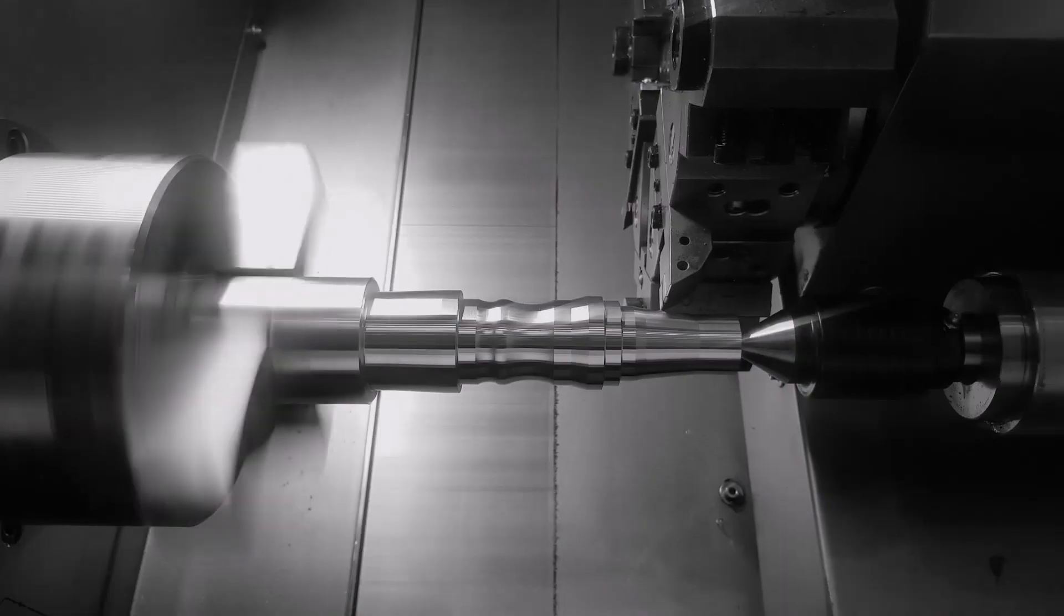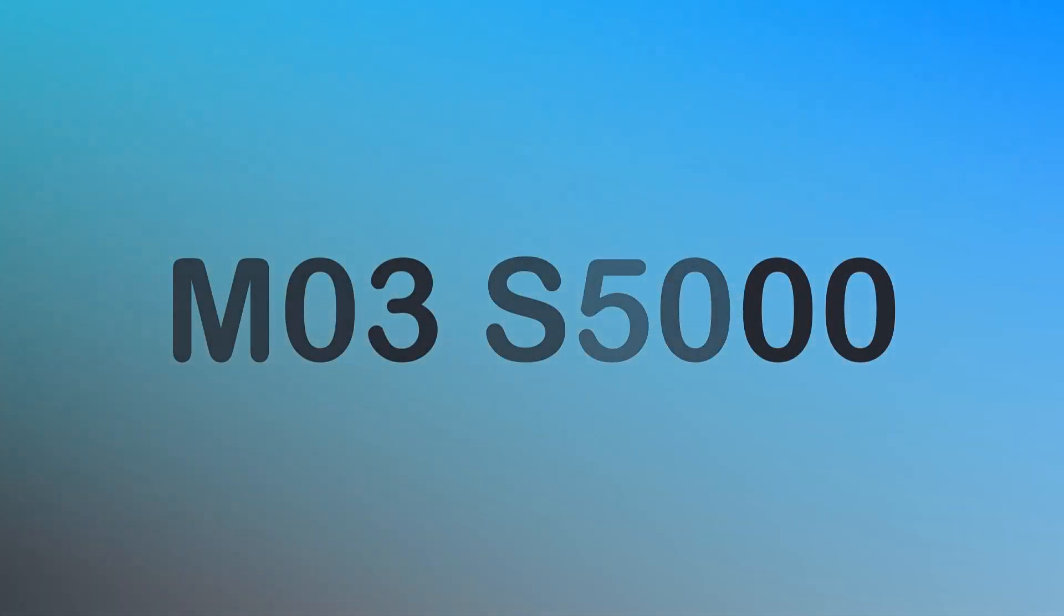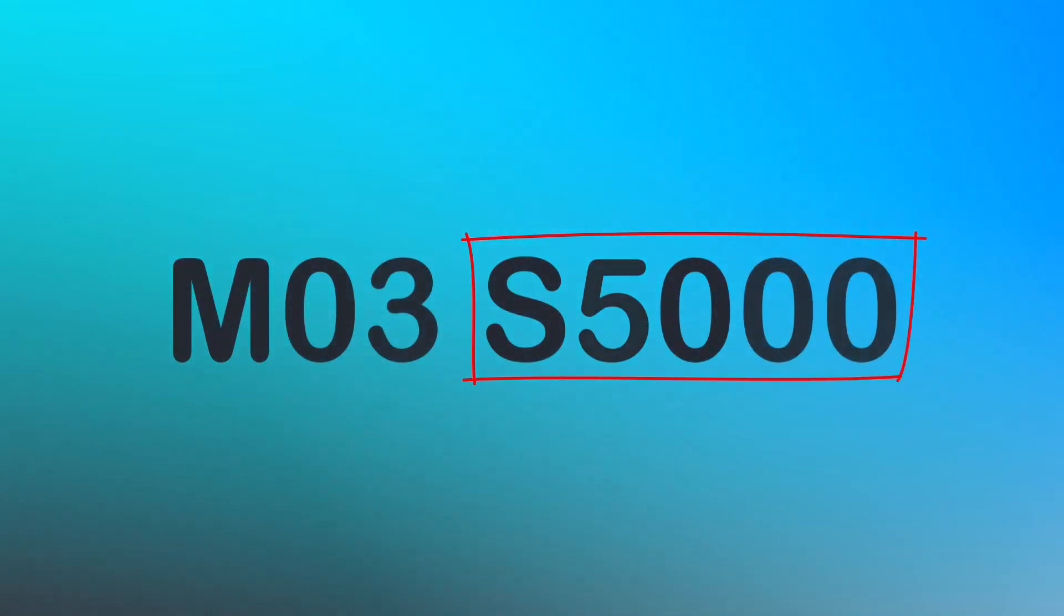You can also specify the spindle speed with an S followed by the desired speed in RPM. For example, M03S5000 starts the spindle clockwise at a speed of 5000 revolutions per minute.